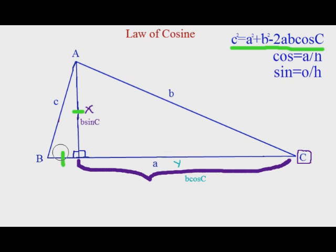Now all we have to do to get this side is subtract this from a. Because your entire side is a, and then that smaller side is b cosine c.